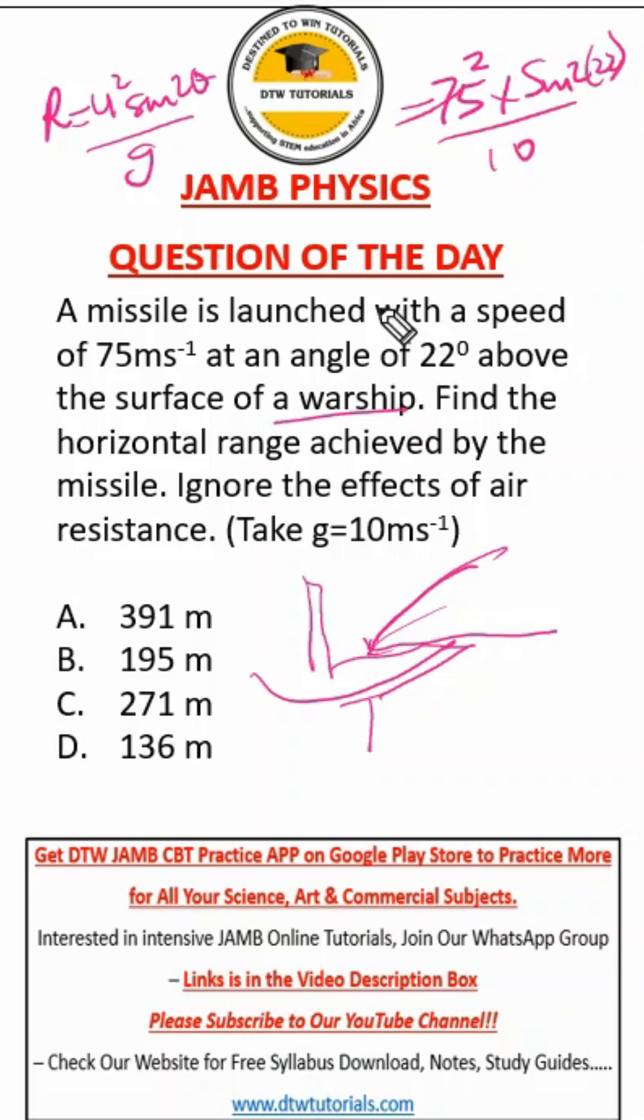That will be 75 squared times sine 2(22) over 10. So 75 squared, you can do it on your JAMB calculator. JAMB has a calculator, you'll see it on your top bar somewhere. 75 squared is going to give you 5625 times sine 44 over 10.